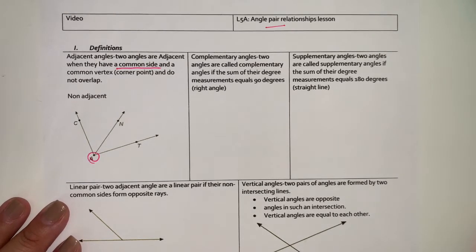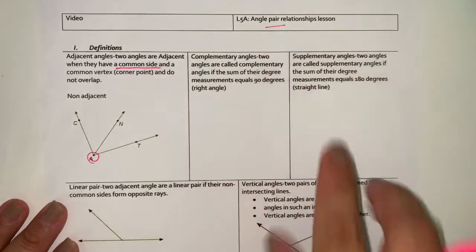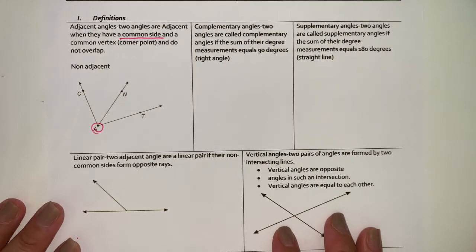Hi, we're going to be talking about angle pair relationships. What you need to know is that we're talking about pairs of angles, so it's only going to be two angles in the set.